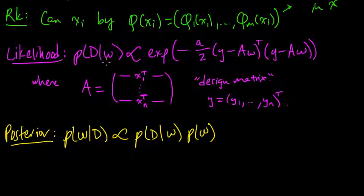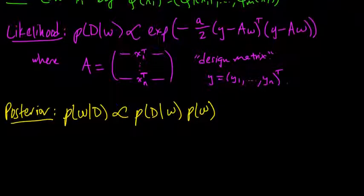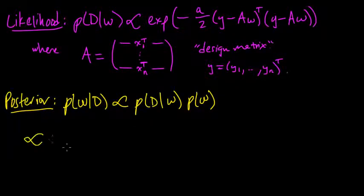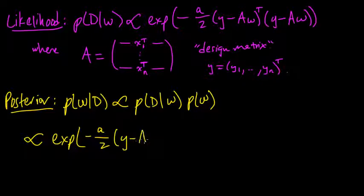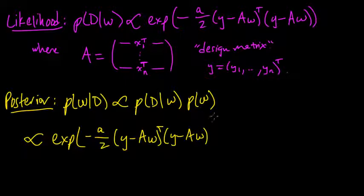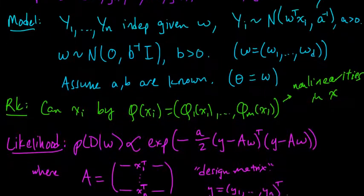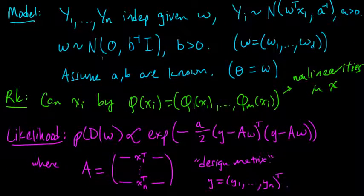And we have an expression here already for the likelihood, so we can just plug that in. So this is proportional to e to the minus a over 2 times y minus Aw transpose, y minus Aw, and what is the prior? So we look back here to our model.